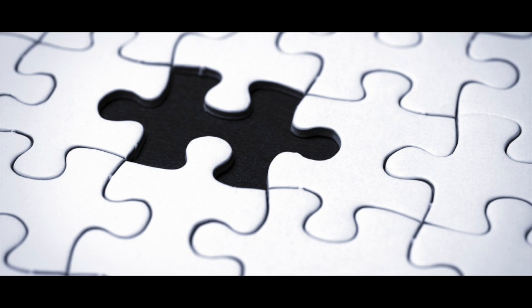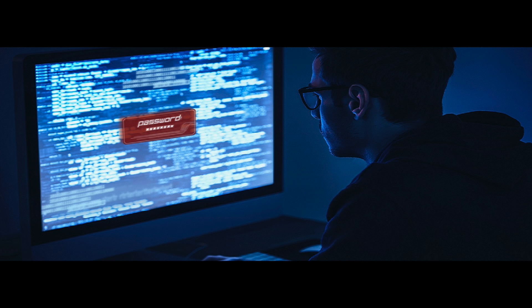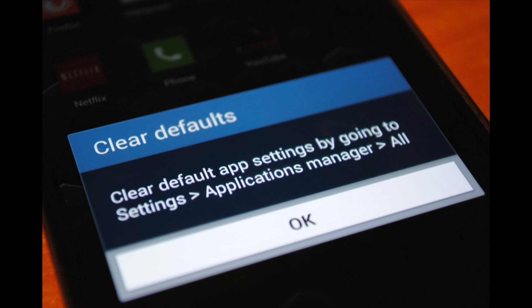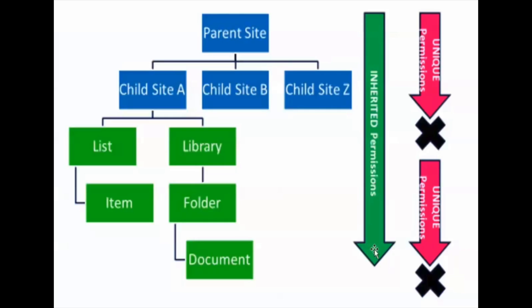Simple, right? But do you notice something missing in that process? That's right — there isn't a required step to specify who can access that bucket. Amazon indicates that the bucket is set up by default as private, but all that means is that the bucket can be accessed by the permissions it inherits from the Amazon Web Services account that set up the bucket in the first place.